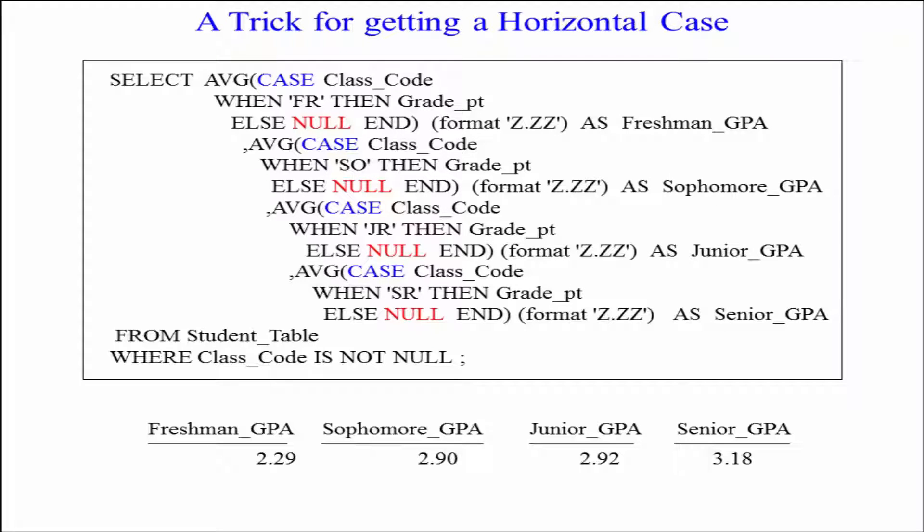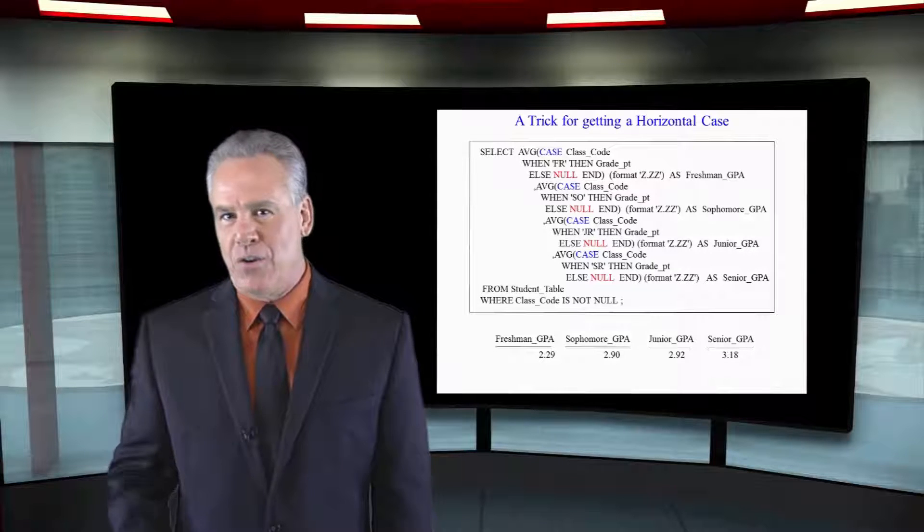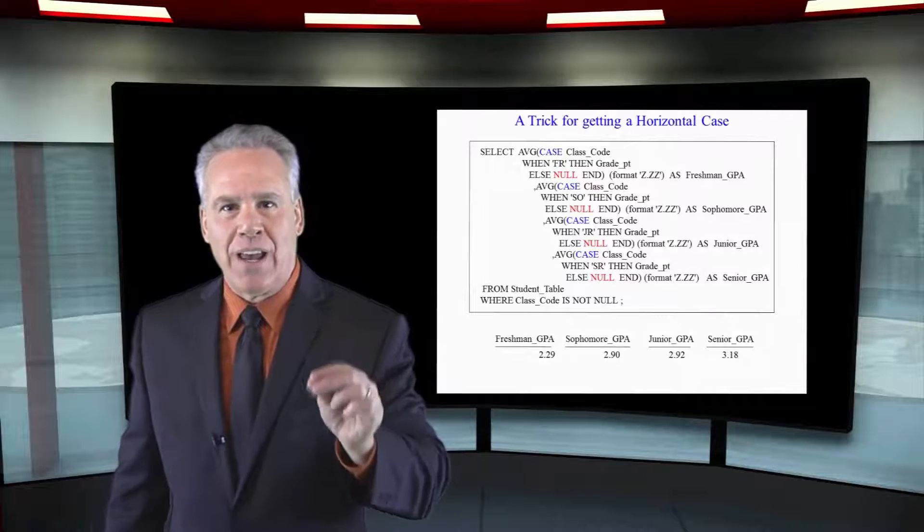Are you a sophomore? If so, average this grade point. Else nulls. So each and every row is going to be evaluated four times.